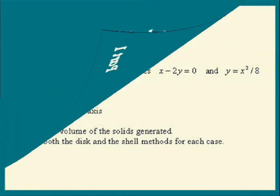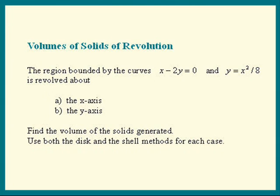Let me state the problem exactly. Here it is. The region bounded by the curves x minus 2y equals 0 and y equals x squared over 8 is revolved about a) the x-axis, b) the y-axis. Find the volume of the solids generated. Use both the disk and the shell methods for each case.